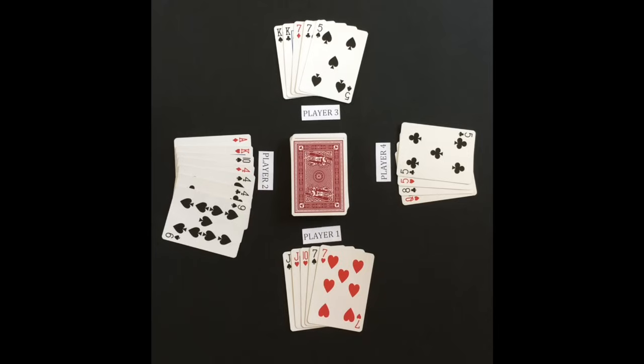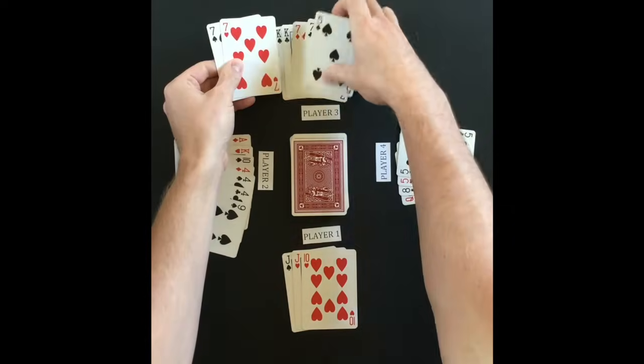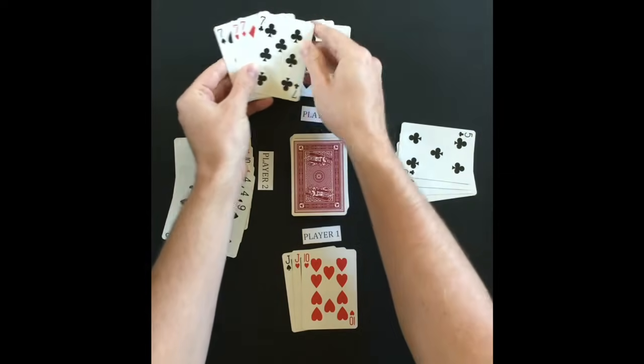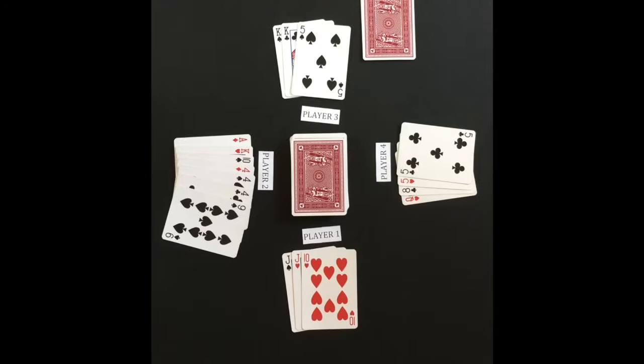Player three will ask player one for sevens. Player one gives player three his sevens and this gives player three four sevens. He will lay them down. Play continues clockwise until all the cards have been laid down into four of a kinds.